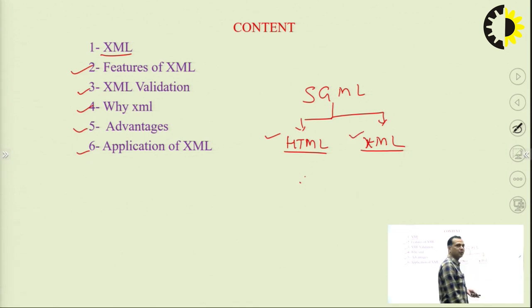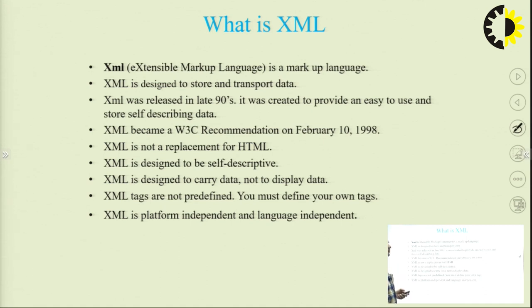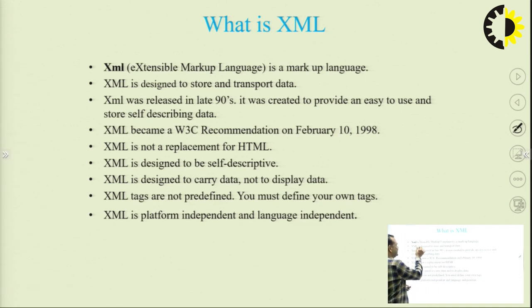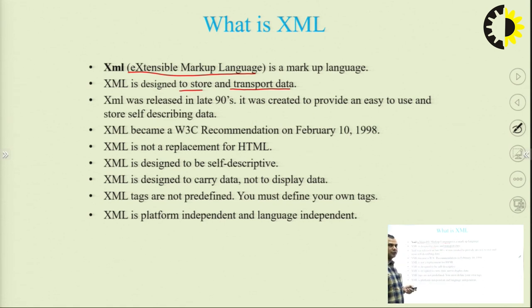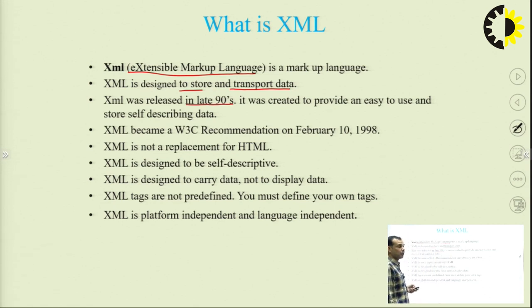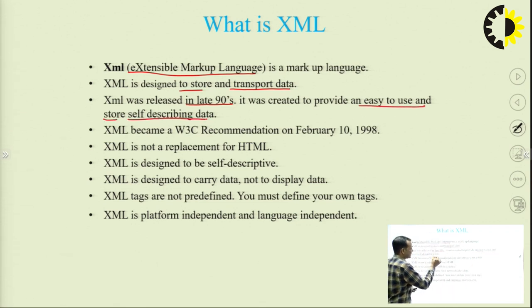XML — Extensible Markup Language — is used to describe the structure when we store data. It is designed to store and transport data. It was released in the 1990s and provides an easy way to use and store self-describing data.